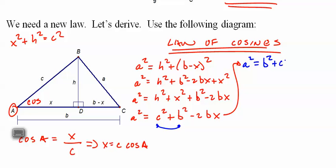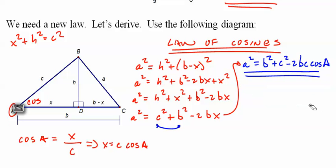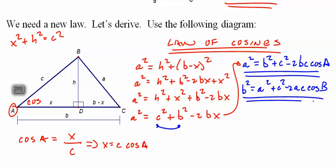That is the law of cosines. You can write it three different ways. Notice if the a is here, the big A is here, then b and c are there. So if I did b squared it'd be a squared plus c squared minus 2ac cosine of B. C squared, a squared plus b squared minus 2ab cosine C.